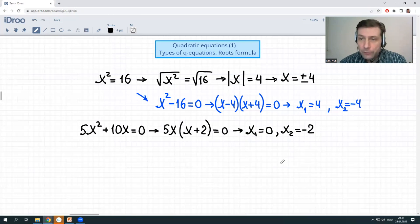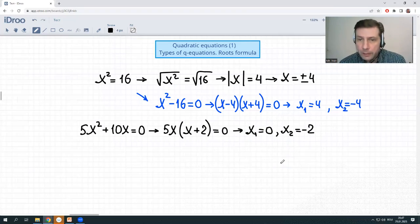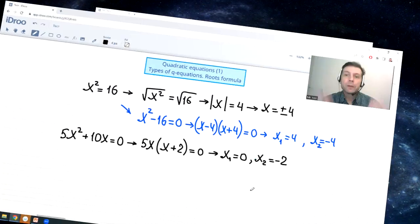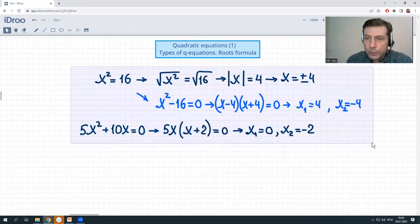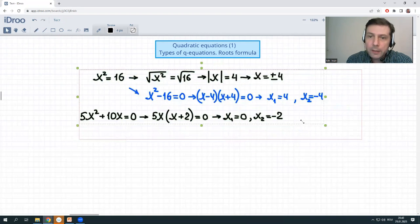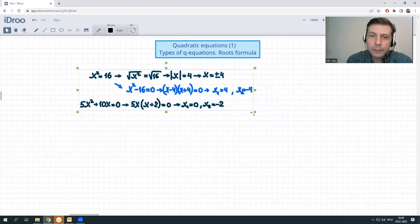Two roots of the first equation, x is 4 and x is negative 4. Two roots of the second equation, x is 0, x is negative 2. OK. This is quite simple, I believe. Let us go to some other cases and let us talk now about the complete ones.